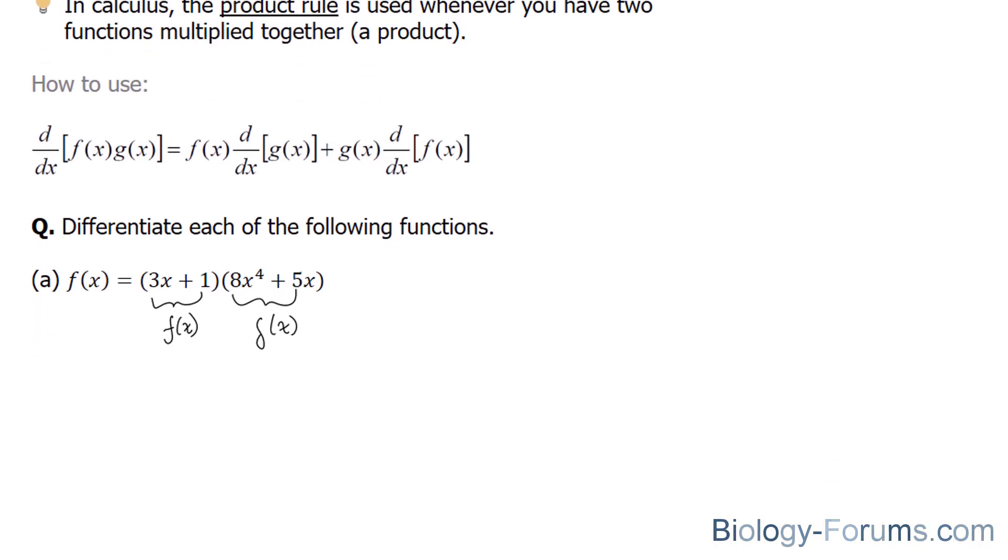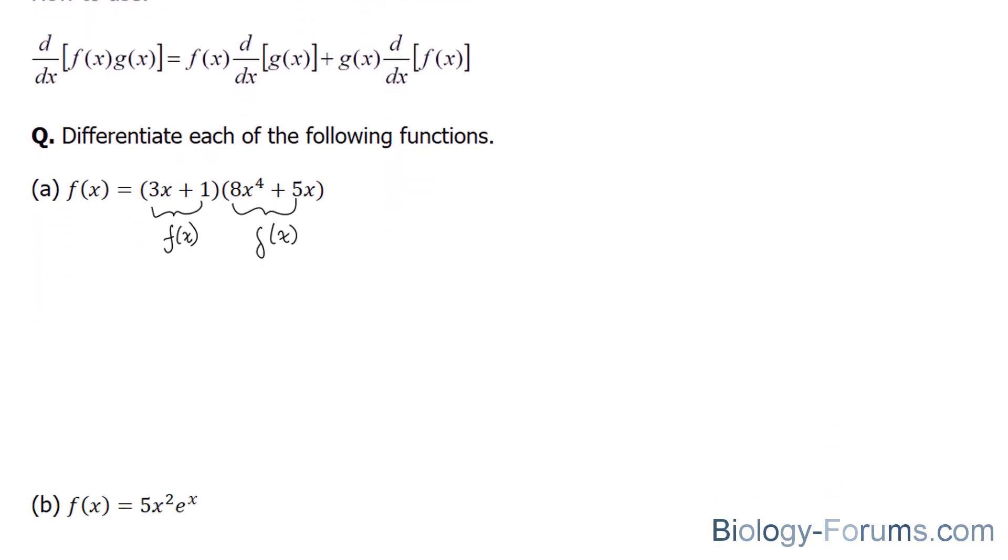Given what we know about the product rule, we'll start off by differentiating this, and then leaving this the way it is, and then adding the differentiated product of this multiplied to this. So let's do that.